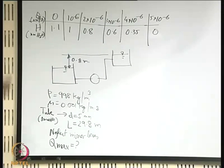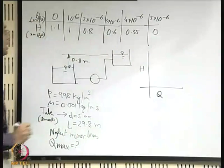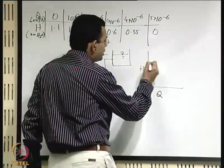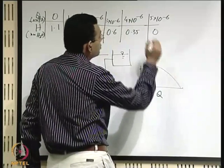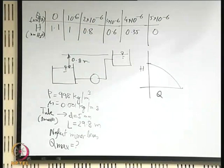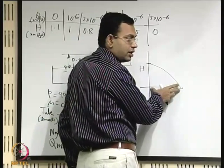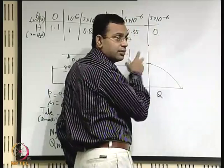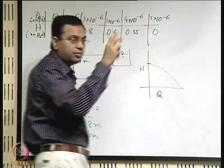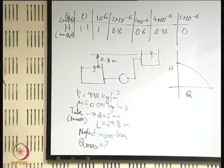Looking at the H-Q characteristics, when Q = 0 there is a particular head, and then H drops until at a particular Q the head becomes zero. So there is a maximum Q from the pump characteristic alone, but this maximum Q may not be achievable in the system because the pump must also satisfy all head losses in the system.